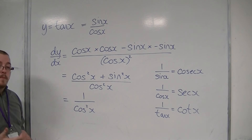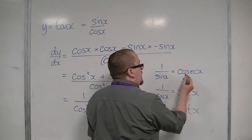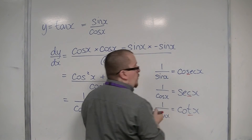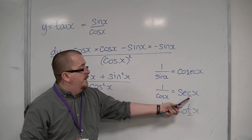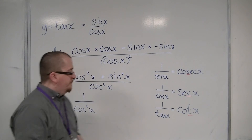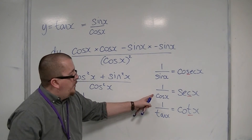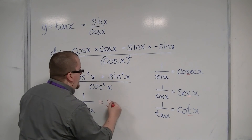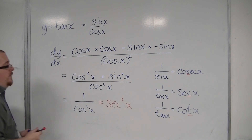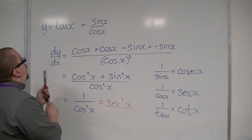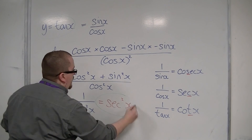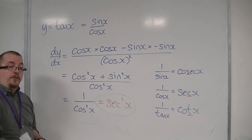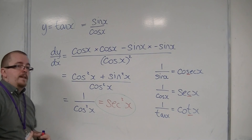Part of the problem of remembering which is which: if you use the third letter rule, then each of the third letters tells you which one is which. Cosec will be sine, sec will be cos, and cot will be tan. So if 1 over cos is sec x, then 1 over cos squared will be sec squared x. Therefore, the derivative of tan x is actually sec squared x, and that one is very useful to remember rather than having to calculate it each time.